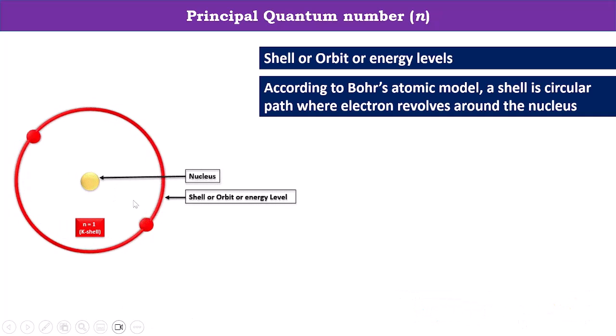So let's consider this image. These electrons are continuously revolving around this nucleus and the circular path of these electrons is called shell or orbit or energy level.